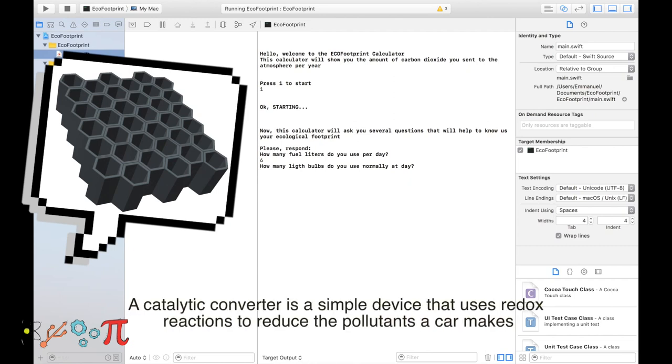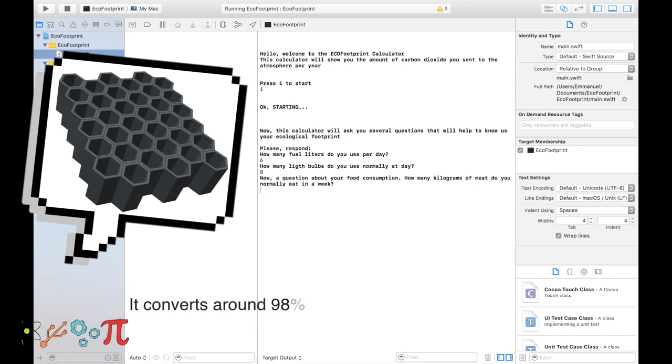A catalytic converter is a simple device that uses basic redox reactions to reduce the pollutants a car makes. It converts around 98% of the harmful fumes produced by a car engine into less harmful gases.